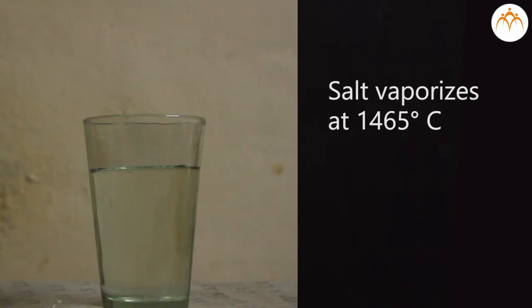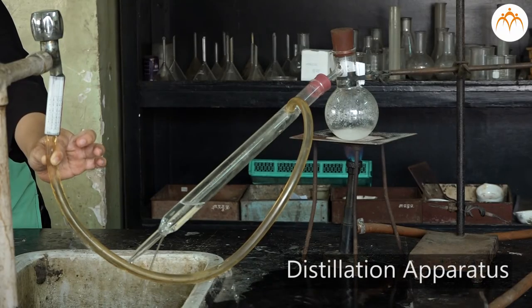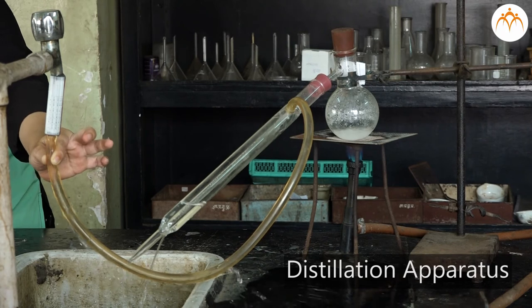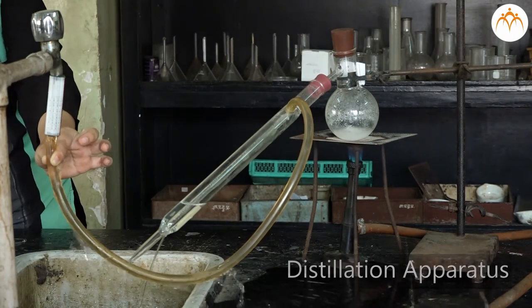We know that salt vaporizes at 1465 degrees Celsius. However, as we know, water gets converted to steam at just 100 degrees Celsius. Thus the distillation apparatus here makes use of this difference in boiling points and helps us separate salt from water.